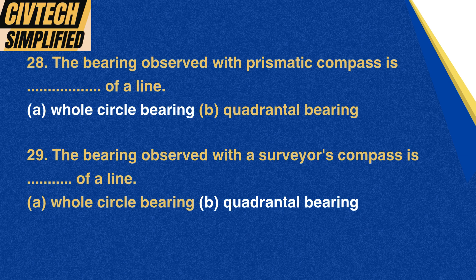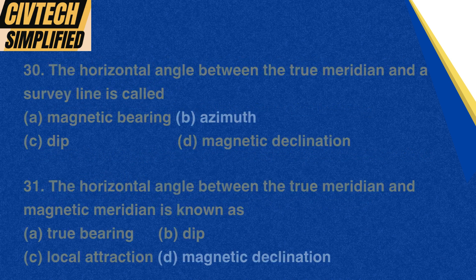Question 27: In a quadrantal system, the bearing of a line is measured: A. Always clockwise from the south point of the reference meridian right round the circle, B. Clockwise or anticlockwise from east or west whichever is nearer, C. Clockwise or anticlockwise from north or south whichever is nearer the line towards east or west, D. None of the above. Correct option: C. Clockwise or anticlockwise from north or south, whichever is nearer the line towards east or west. Question 29: The bearing observed with a surveyor's compass is: A. Whole circle bearing, B. Quadrantal bearing. Correct option: B. Quadrantal bearing.